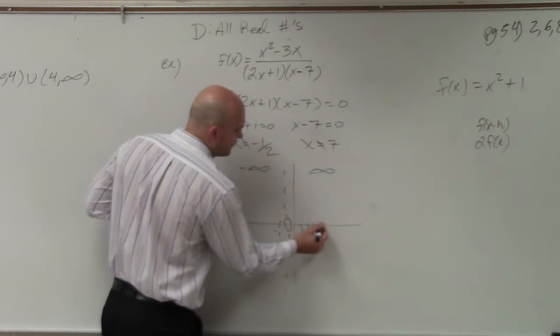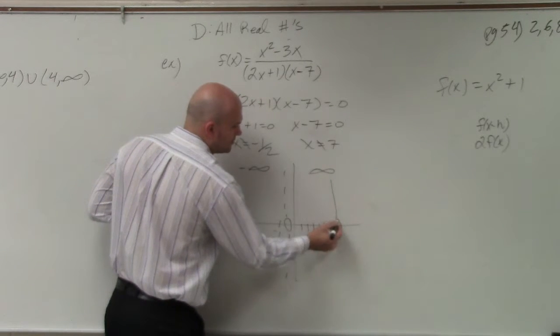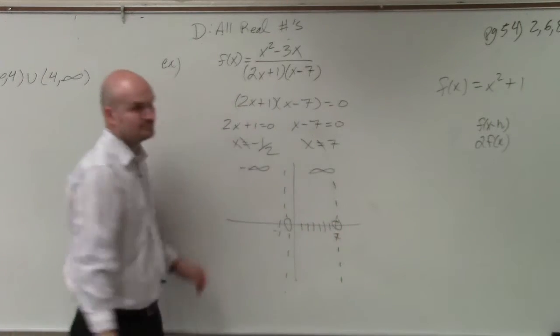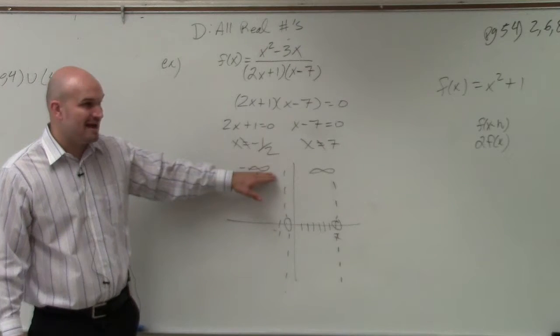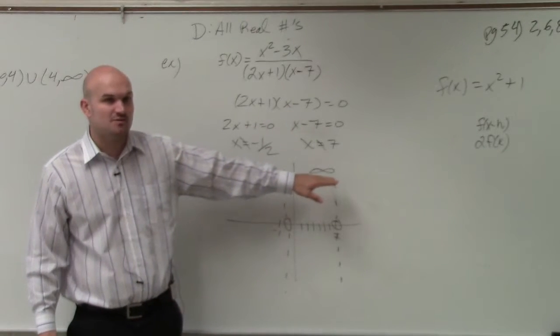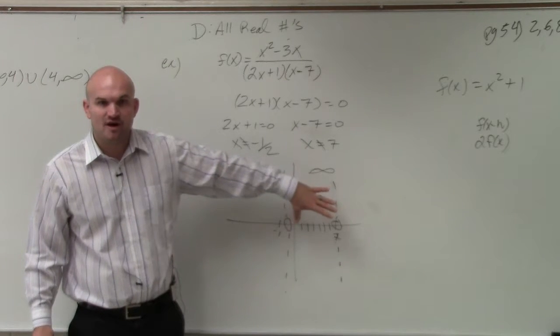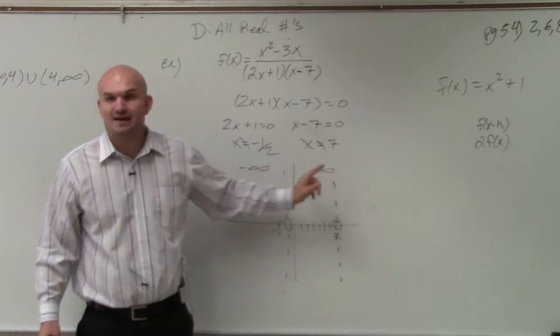At 7, there is a hole or an asymptote. So the implied domain of negative infinity to infinity doesn't work because we have two values where we can't have in our domain.